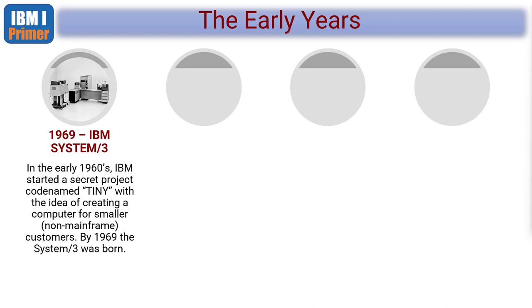Back in 1969, it was the summer of the IBM System 3. In the early 60s, IBM had started a secret project code-named Tiny. The idea was to create a computer with a smaller footprint than their huge mainframe systems. Back in those days, mainframe computers filled rooms with hardware — the size of a single-storey dwelling. By 1969, this first tiny computer system, the IBM System 3, was launched, aimed at smaller businesses.